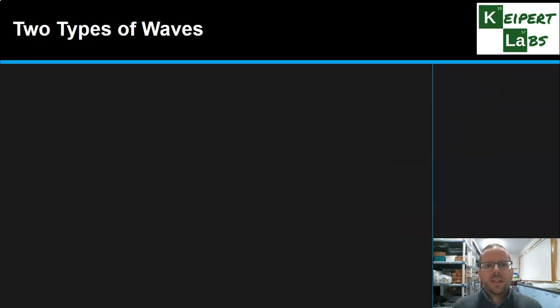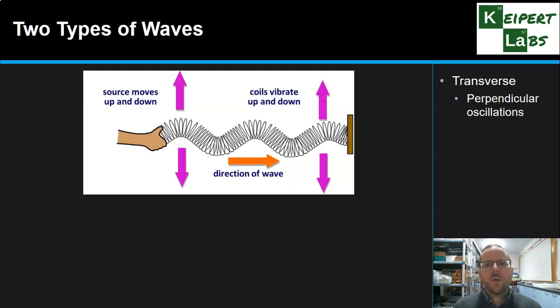We look at this idea that there are two broad types or categories of waves based on what those oscillations look like. So the first one we call transverse waves. For both of these we can visualize a slinky. Someone holding the end of the slinky and then shaking it up and down. So the source or the oscillating particle moves up and down, but the energy is transferring from left to right.